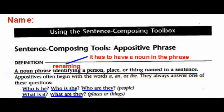Today we're going to look at appositive phrases in our writing. Go ahead and put your name at the top of the page. An appositive phrase is a noun phrase identifying — or really renaming — a person, place, or thing named in a sentence. It has to have a noun in its phrase that renames another noun that pre-existed before it in the sentence.